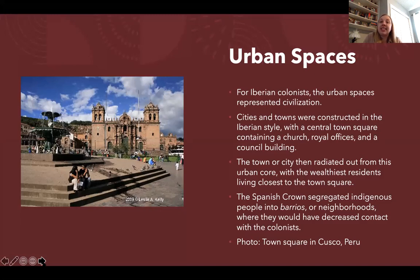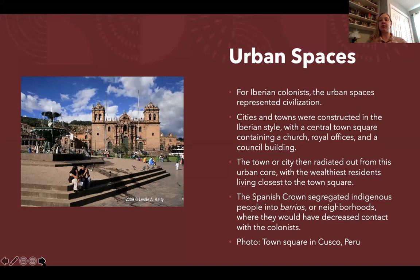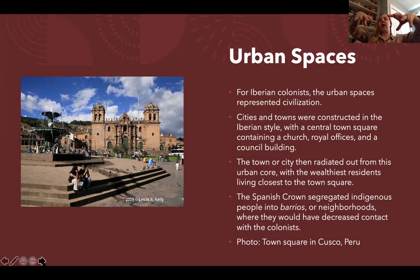The urban spaces of colonial Latin America were seen as oases of civilization by Europeans. The Iberians brought their architectural style to these spaces — a central town square generally with a fountain, the church, royal offices, and a town council building. From the town square, streets radiated outward, with the wealthiest residents living closest to the center of town.